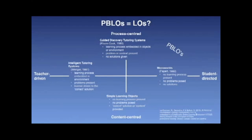PBLOs present contexts within which problems may be identified, similar to GDTS characteristics. However, fundamental differences exist: learning processes are suggested through the four-page structure, but the actual process is ultimately determined by the learner community depending on how problems are identified and solutions created. PBLOs do not conform to the definition of a micro world because they do not present the simplest case of a domain and do not necessarily match the learner's cognitive and affective states. Positioning PBLOs in the quadrant formed by the intersection of process-oriented and student-directed seems to be the best placement for these types of objects.